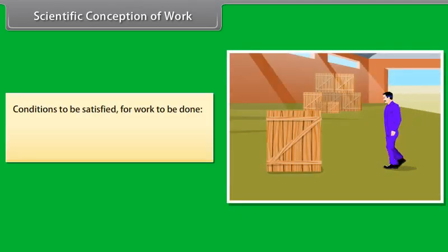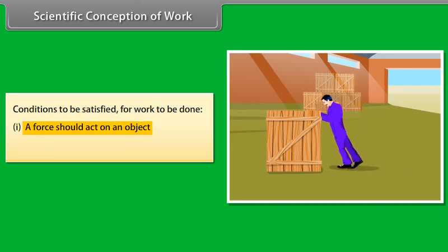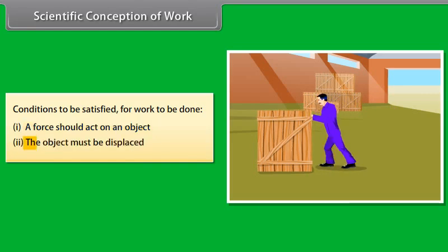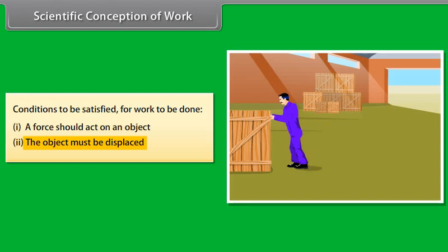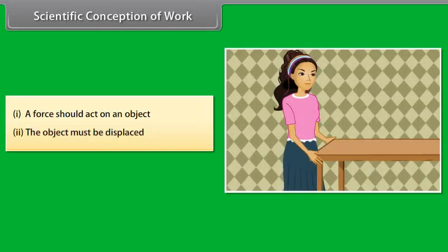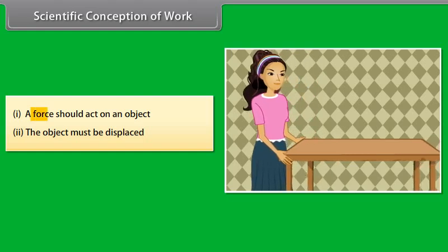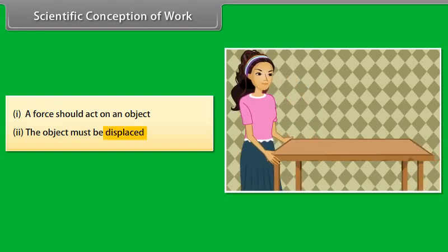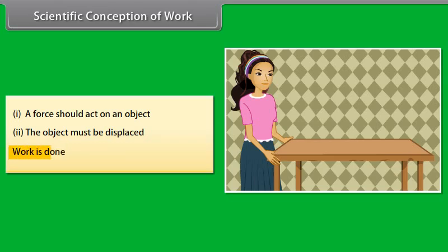For work to be done, these two conditions should be satisfied. First, a force should act on an object. Second, the object must be displaced. Let's take a look at a few situations. If we pull a table and the table moves through a distance, we have exerted a force on the table and it is displaced, so both conditions are satisfied. Therefore, work is done.